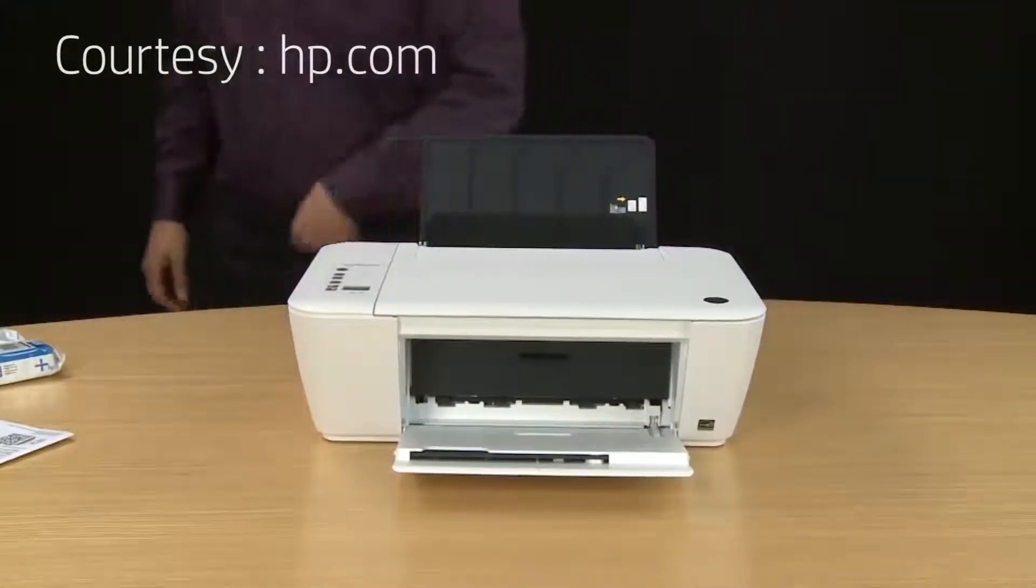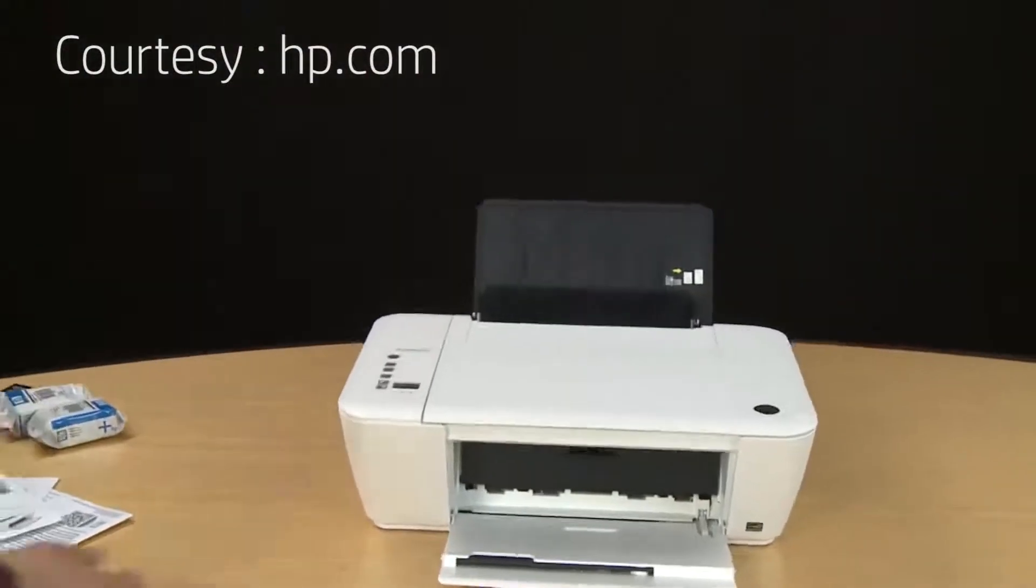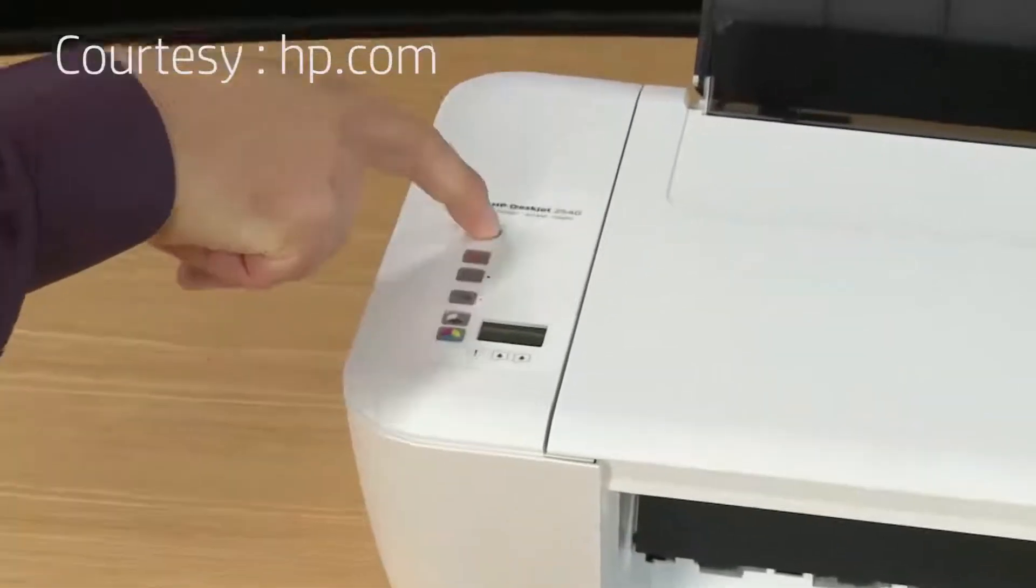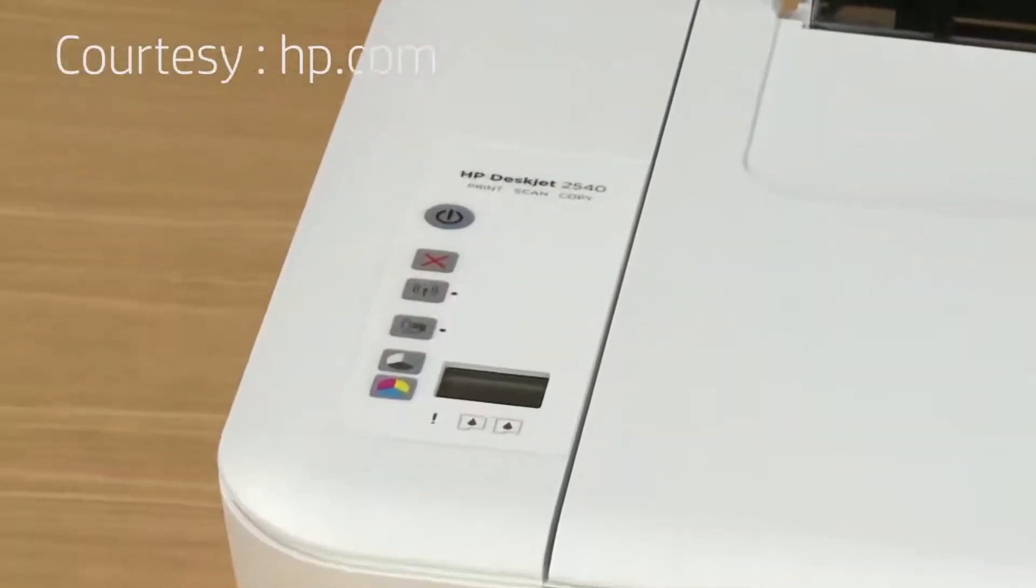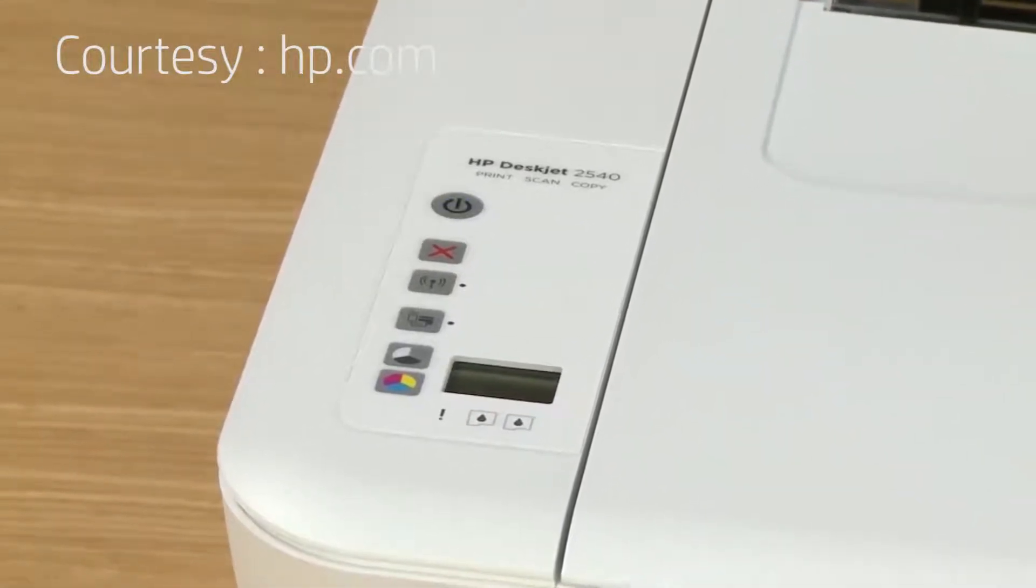Once everything is plugged in, we'll move to the front of the printer. Look on the top, locate the power button, and press it to power on your printer. After you press the power button, several lights will start blinking and you'll hear the printer making noise while it sets up for use.